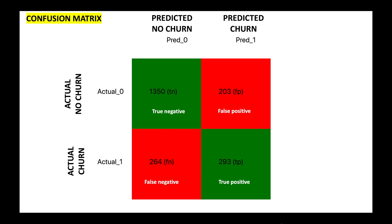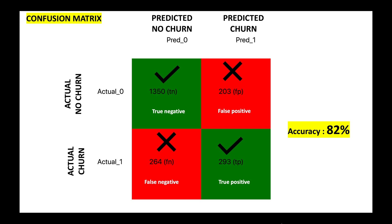The results can be visualized as a confusion matrix which is shown on the screen. We have 1,350 customers in the test data who did not actually churn and XGBoost predicted it correctly. Similarly, there are 293 customers who have churned and XGBoost also predicted them correctly. The algorithm got confused and did not predict correctly for some customers, but that is okay as it is difficult for machine learning to be 100% accurate. The XGBoost has achieved an accuracy of 82%, which is good enough to go to the next step.